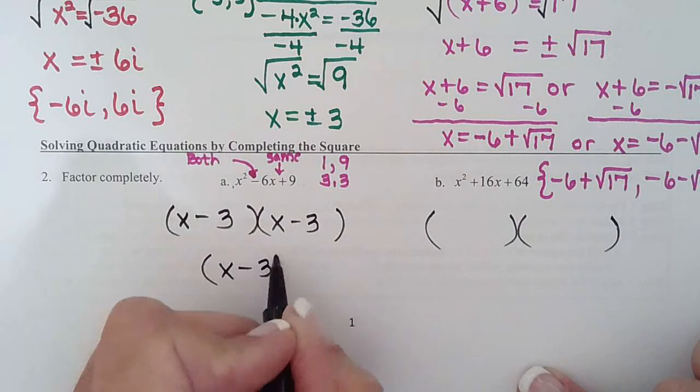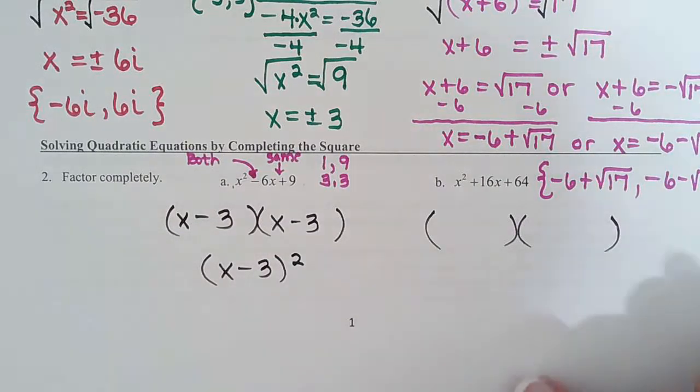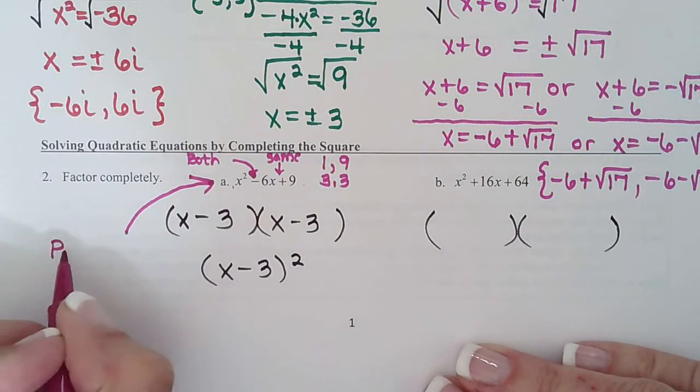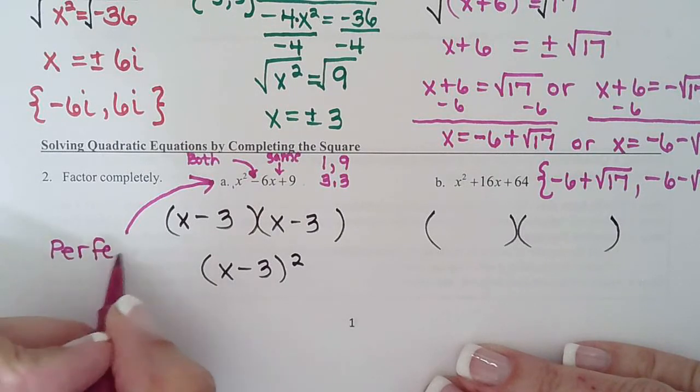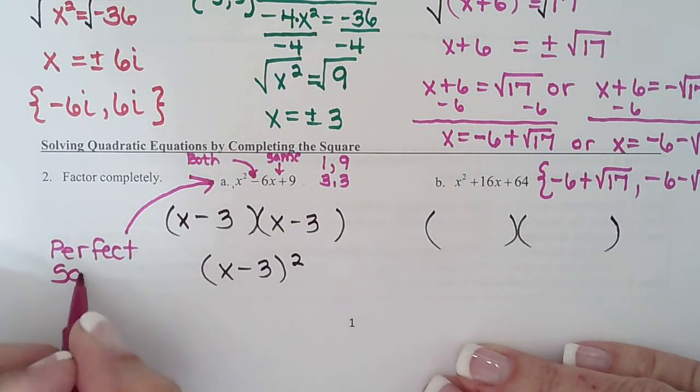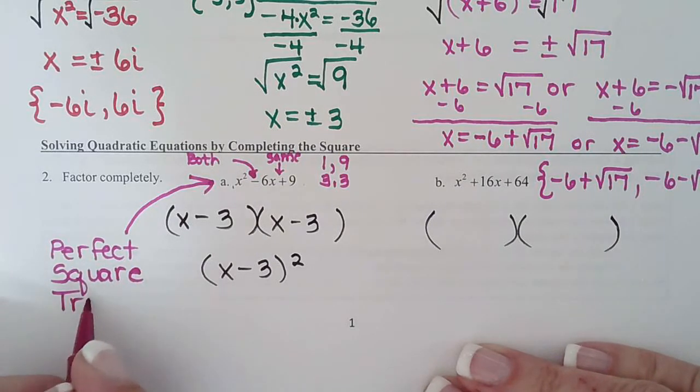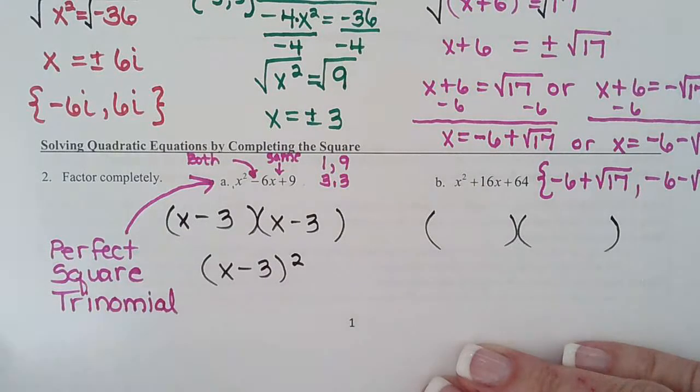We also learned in chapter 4 that we could write it like that. And that's how we're going to do it in this section because we're going to be completing the square. So this is what we called in chapter 4 a perfect square trinomial.